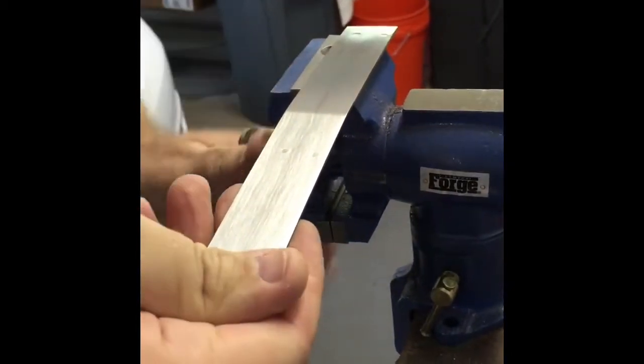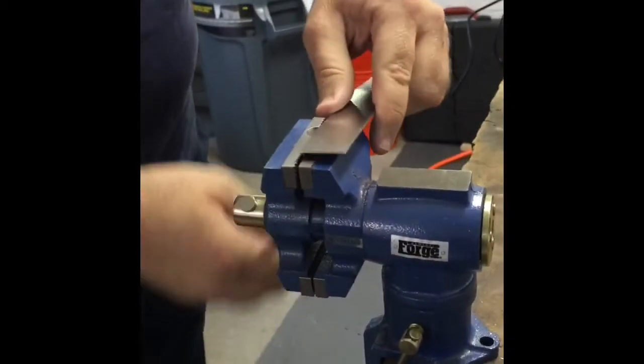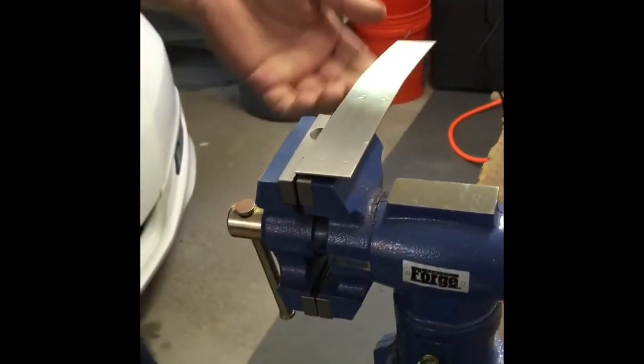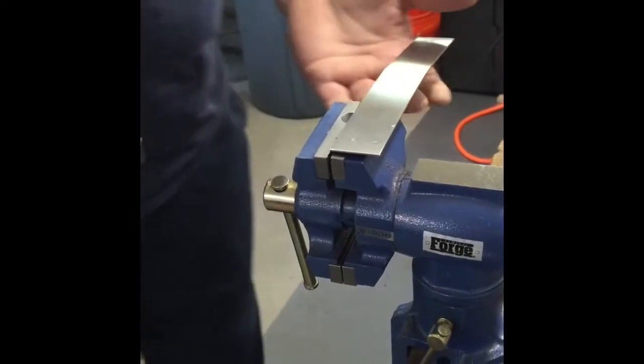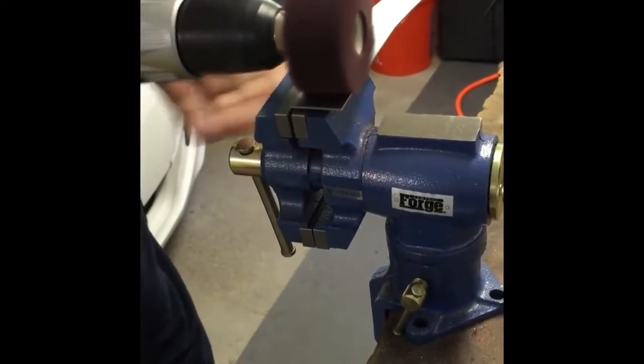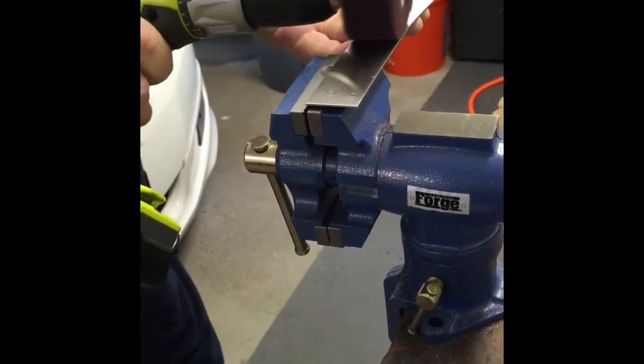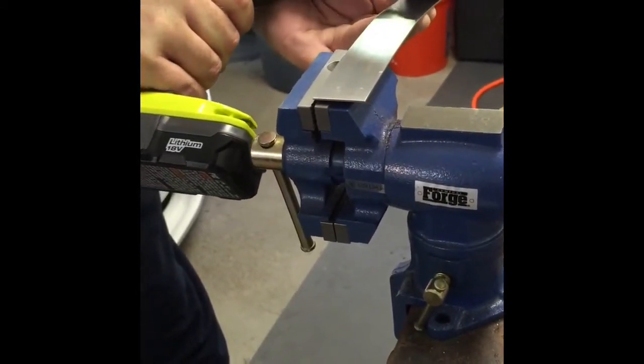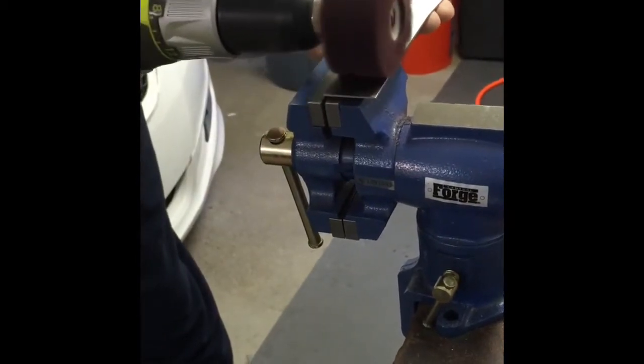Basically all you're doing is sanding that metal and regraining it. I was fortunate enough, one of the fellow pinsiders had a new piece that I needed for my T2. Mine had a big gouge out of it, so that's what I'm doing now, just regraining this new piece that I got from him. The resources here on Pinside are awesome.